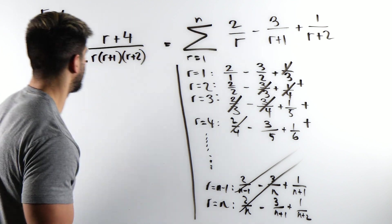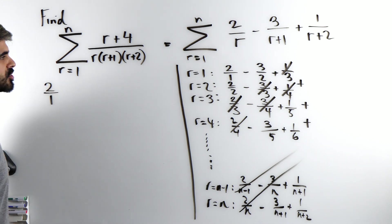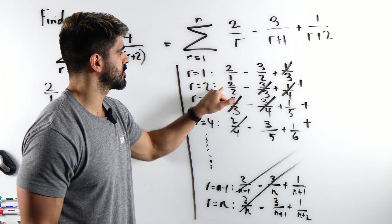So we have 2 over 1. I'm going to keep it as 2 over 1 because we're going to be putting everything into one fraction.